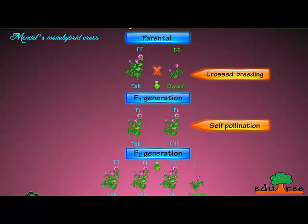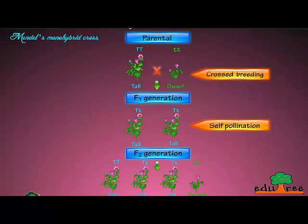Mendel observed variations in the characteristics of garden pea plants, which he had cultivated in his monastery garden. He was curious to find out the results of crossing pea plants with variations in traits. Let's study some of the visible contrasting characters that Mendel observed in his monohybrid cross.